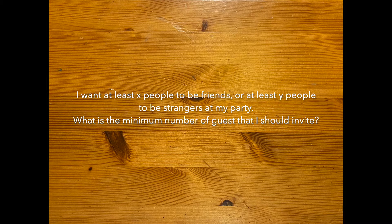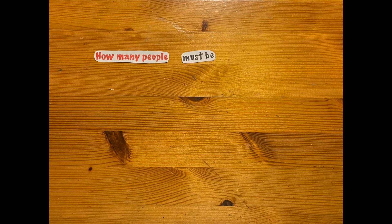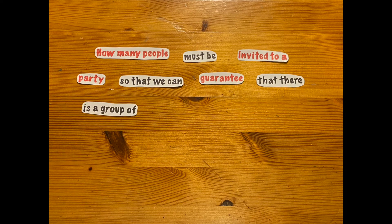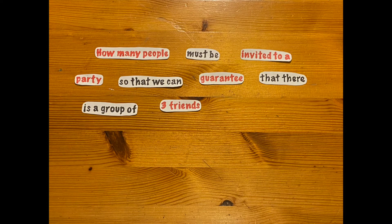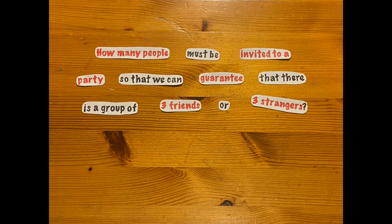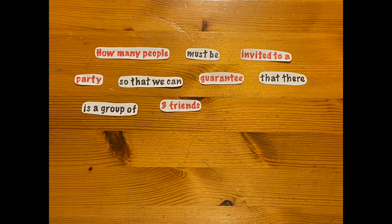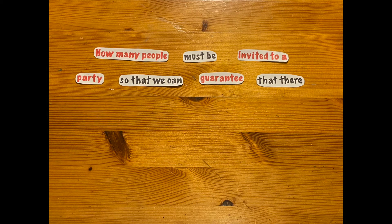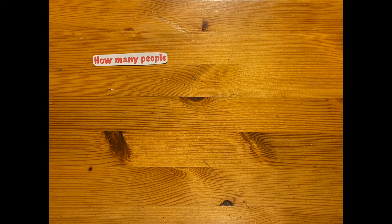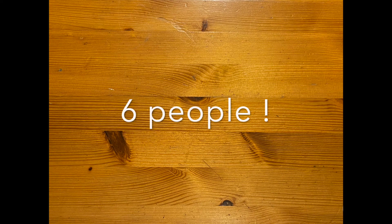We'll start with a simple case. Let's ask ourselves: how many people must be invited to a party so that we can guarantee that there is a group of three people who are either all friends or all strangers? Let's also assume we want to invite the minimum number of people because we would like to spend as little money as possible. The answer is six people.